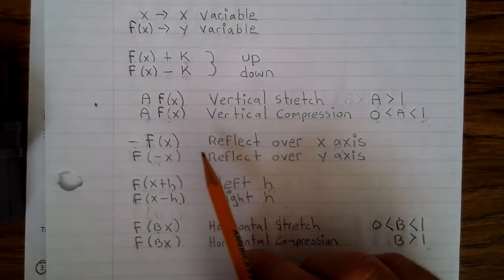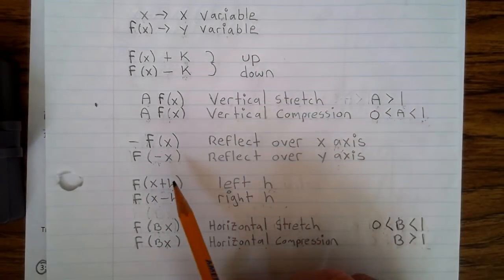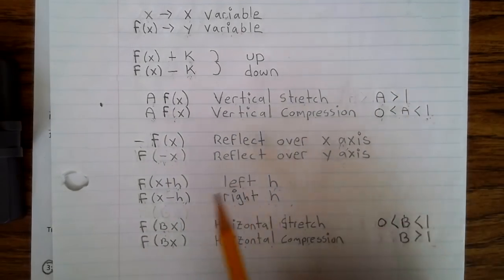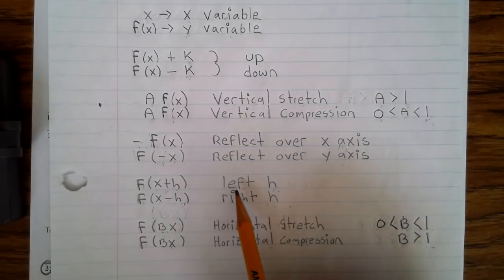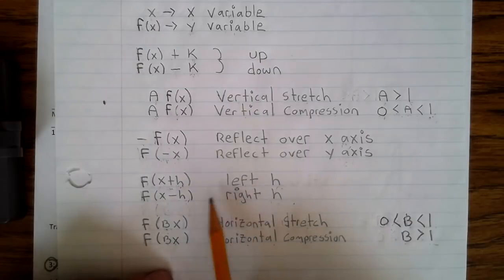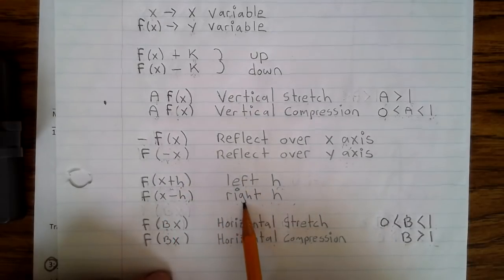Now when you have negative f(x), it reflects over the x-axis. When you have f(negative x), it reflects over the y-axis. Here you have f(x + h), it's left. Now here, it's opposite. So instead of plus, you think going right, but it goes left. Here minus h is right h, so opposite.